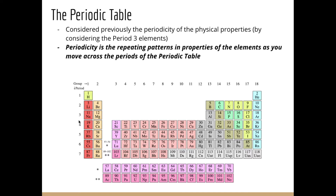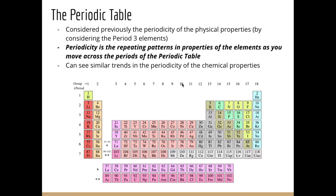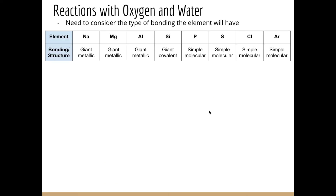We look specifically at the period three elements, highlighting them as a case that we can then extrapolate to the rest of the periodic table. To remind you, periodicity is the repeating patterns in properties of the elements as you move across the periods of the periodic table. We can see similar trends in the chemical properties like we did with the physical properties, and we can highlight this by looking specifically at period three.